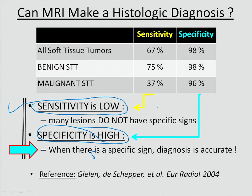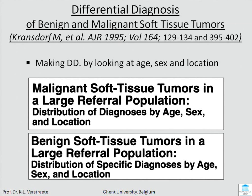In the majority of lesions, your answer will be 'I don't know the name of the lesion.' You can use the Kranzdorf review articles covering more than 50,000 tumors, which give you a reference population. If you have a child of seven years with a mass in the thigh, you look in the table — child, seven years, thigh, mass — and it gives you the frequency of lesions for all ages, men, women, and different locations. That's a good start.